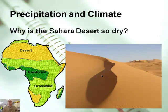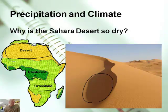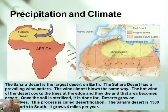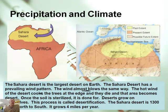Here's an interesting thing. Why is the Sahara Desert so dry? The Sahara Desert is, of course, in northern Africa right here. We've got a rain forest right here, grassland, and this is a desert. The Sahara Desert is the largest desert on Earth. It has a prevailing wind pattern; the wind almost always blows the same way.